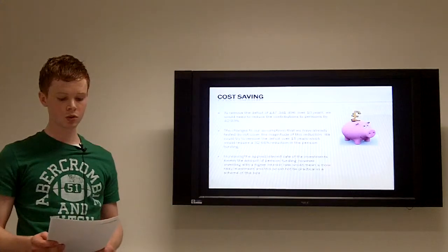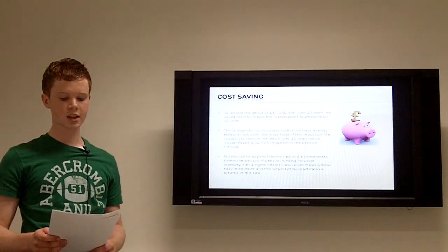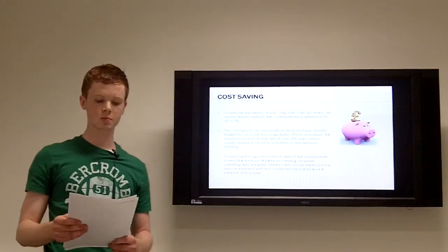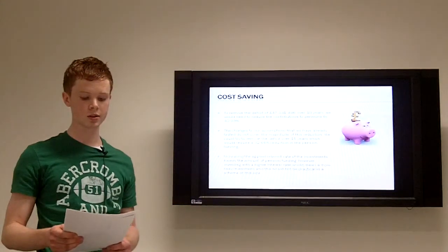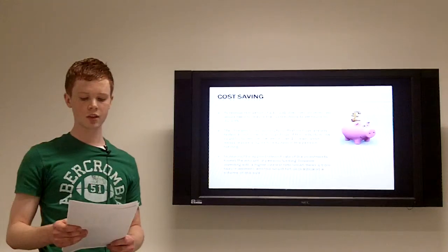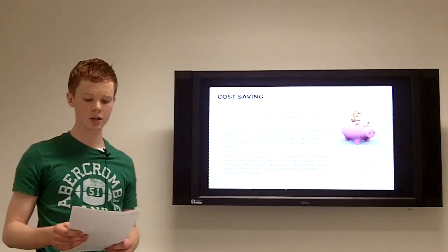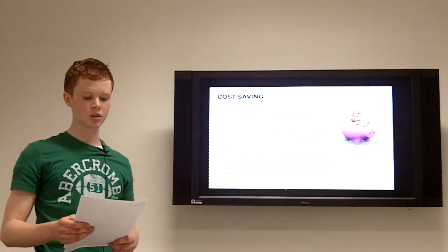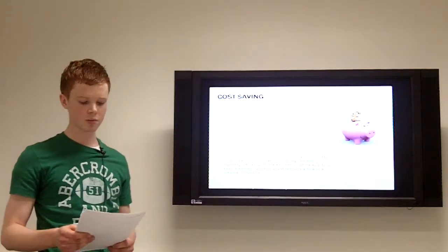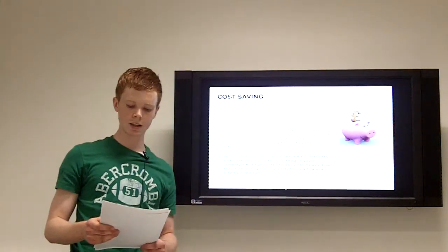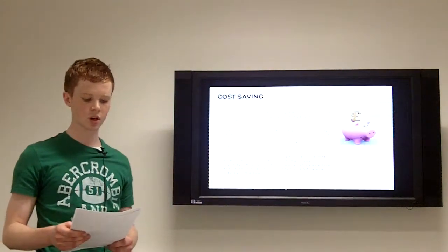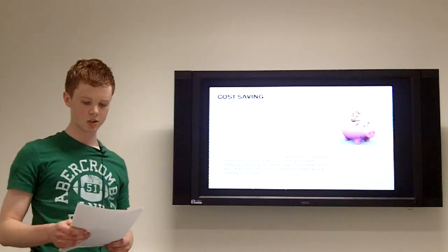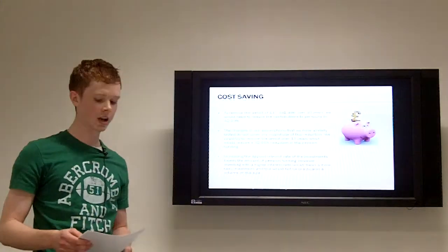Cost saving: In order to reduce the deficit which is around £47 million over 10 years needed to reduce the contributions by pensioners by 42.93%. As you can see from our sensitivity analysis the changes to our assumptions that we already have tested do not cover the magnitude of this reduction. Changing the accrual rate from 1/60 to 1/80 lowered the future service valuation for active members by the scheme by 3% which is not a sufficient measure to remove the deficit.